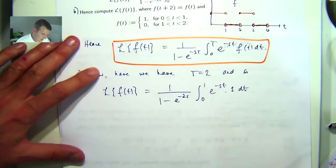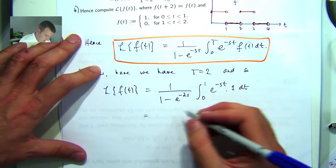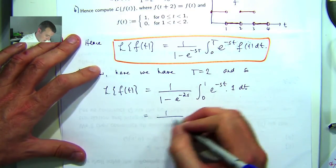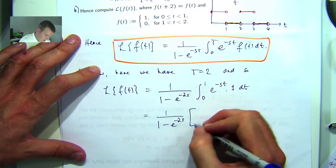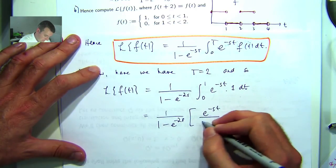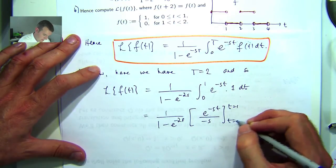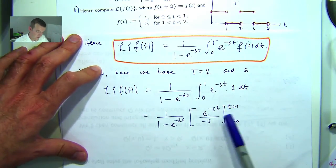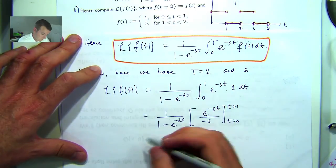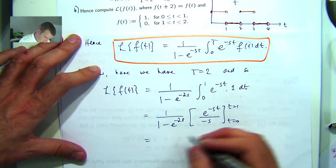So now it's just a matter of evaluating this. So we can integrate with respect to t, keeping s as a constant. And we'll get 1/(1 - e^(-2s)) times [-e^(-st)/s] evaluated from 0 to 1. When we sub in t equals 1 and t equals 0, I'll get the following result.